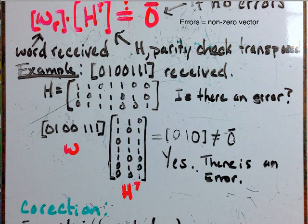As we can see, this is not a zero vector. Again, zero vector would just be that. So yes, there is an error, because this is not a zero vector.